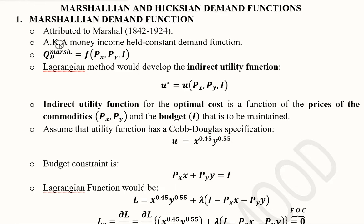The Marshallian demand function is also known as the money income held constant demand function. This is a very suitable name because it explains it all — it tells us that in this process we are keeping the money income or the budget constant, and when we do this we get the Marshallian demand function.